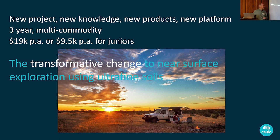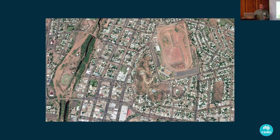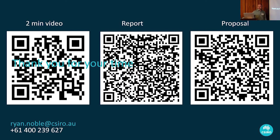Three years, multi-commodity, with a lot of information available online. Coming full circle — next time you pass the Mount Isa racetrack or something similar, I want you to think about the ways we can do our geochemistry better and the opportunities out there in shallow cover in particular. Those are the QR codes — if you've got a smartphone, take a picture and get all the information you need. Thank you.